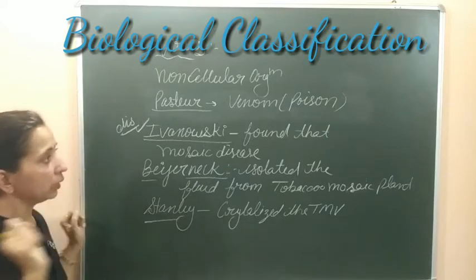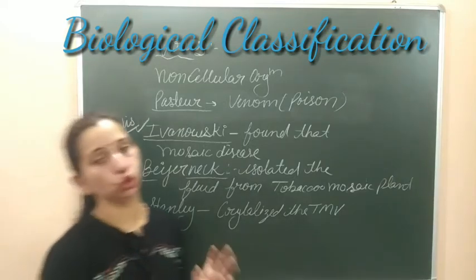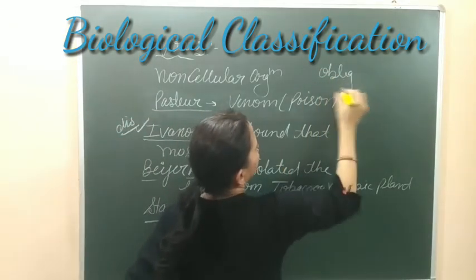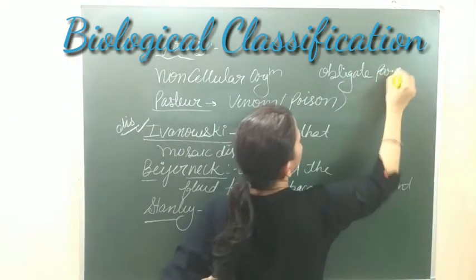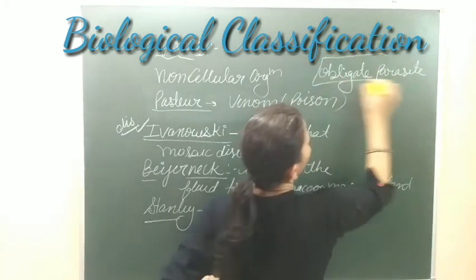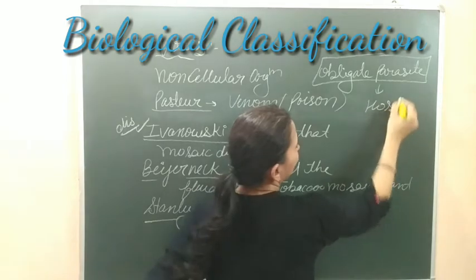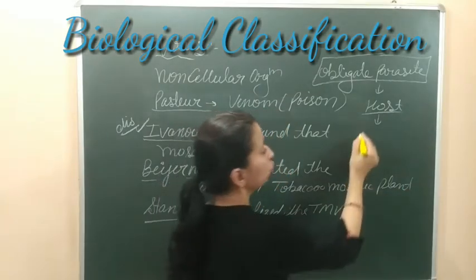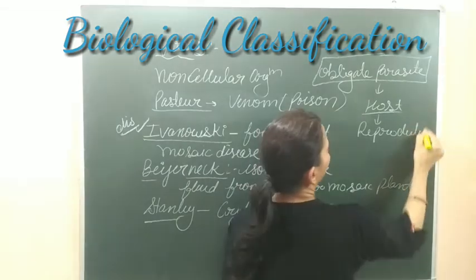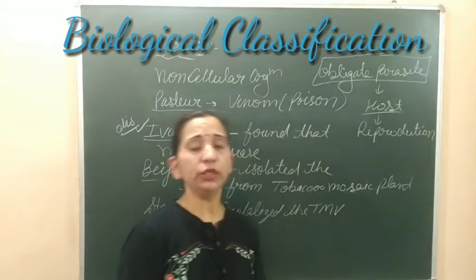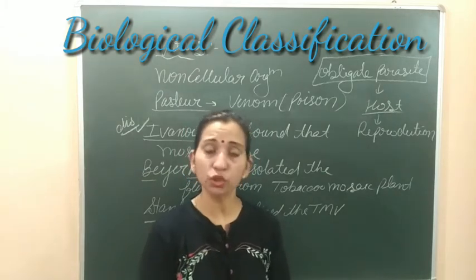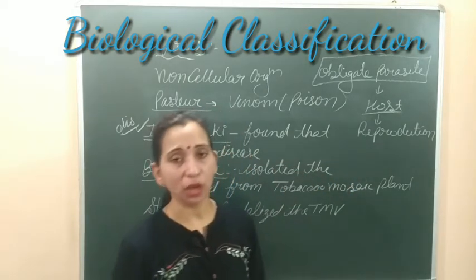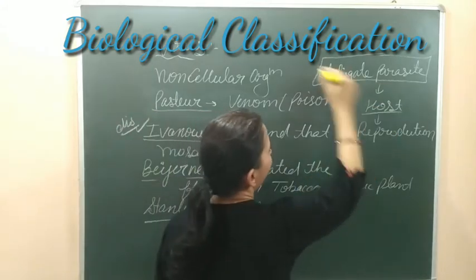Viruses cannot survive without a host, so we can say they are obligate parasites. Obligate parasite means they are not able to survive without a host — they require a host for their growth, development, and reproduction. They reproduce inside the body of the host, and when they enter the host body, they take over and use the host's cellular machinery for their reproduction and growth.